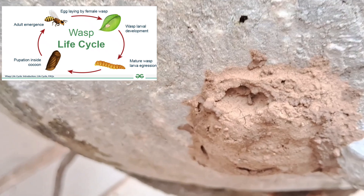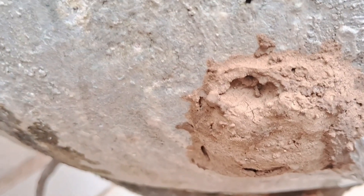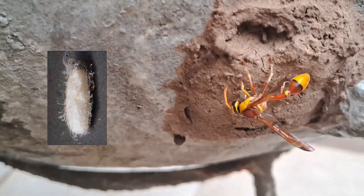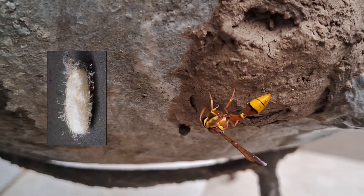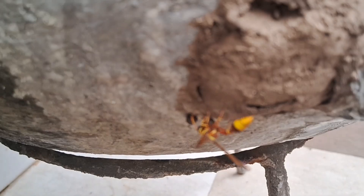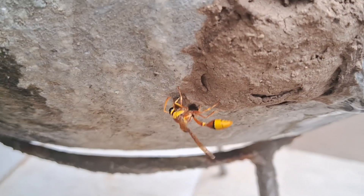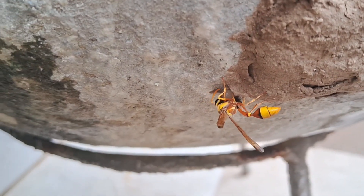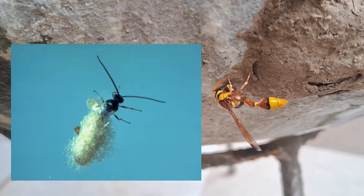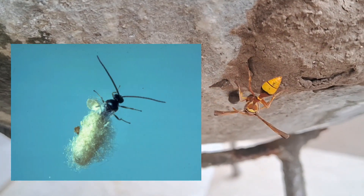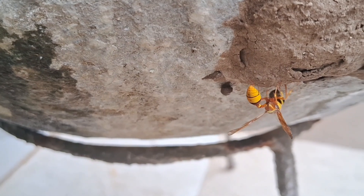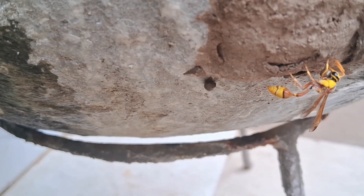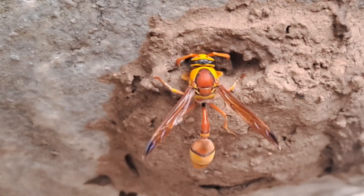The larvae feed on the insects provided by their parent, grow into pupae, and spin a cocoon around themselves. Then after some days, the adult comes out of this cocoon. This is all about the life cycle of the wasp.